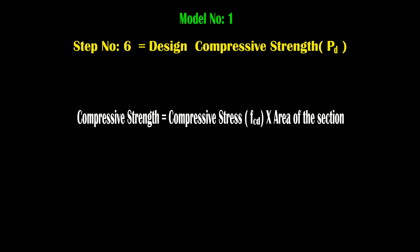Step number 6 is design compressive strength. Do not confuse step 5 and step 6: step 5 gives design compressive stress (FCD), while step 6 gives design compressive strength (PD), where P stands for compressive strength and D stands for design. The formula for design compressive strength is: PD = FCD × A, where FCD is the compressive stress and A is the area of the section.